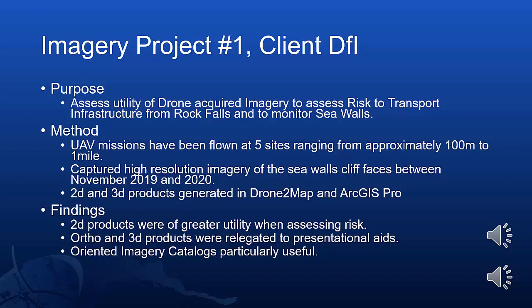The first project that I'm going to discuss was carried out for our client, the Department for Infrastructure of Northern Ireland. The purpose of the project was to assess the utility of drone-acquired imagery when assessing the risk to transport infrastructure from rockfalls, and also to monitor sea walls. UAV missions were flown across five sites ranging in size from approximately 100 metres to our largest site at Benoan, which was one mile long. High-resolution imagery of sea walls and cliff faces were captured between November 2019 and 2020, and a range of 2D and 3D products were generated in Drone2Map and ArcGIS Pro. The findings were that the 2D products were of much greater utility when assessing risk, the ortho and 3D products were relegated to presentational aids, and the oriented imagery catalogs proved to be particularly useful.